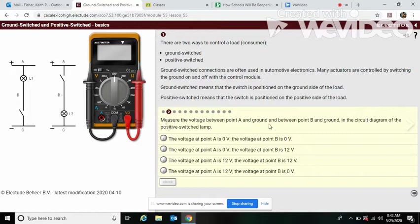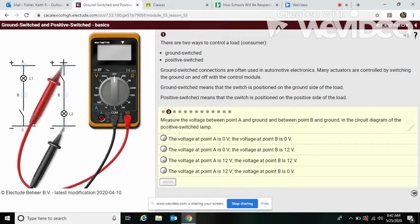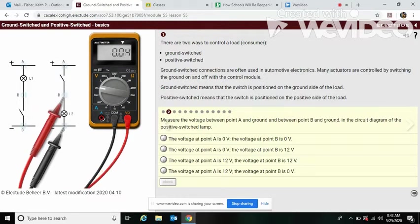Measure the voltage between point A and ground and between B and ground on the positive lamp. So here's our positive side. Might as well just move our lead in place. Let's set our meter. We have 12 volts at A and no volts at B. That's probably because this switch is open, it's not allowing supply voltage through. So the voltage at A is 12 and B is 0. So this has to be our correct answer.